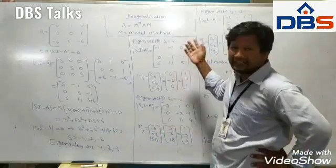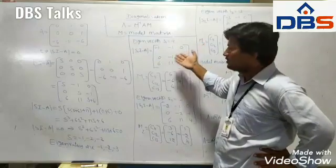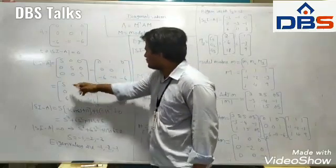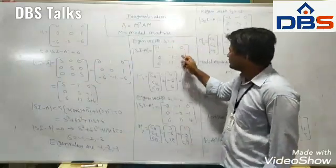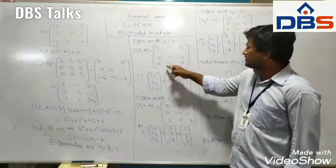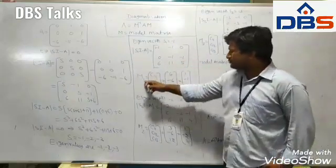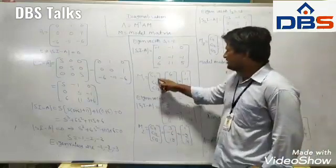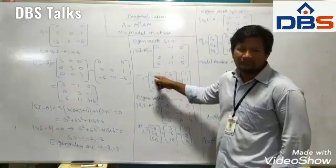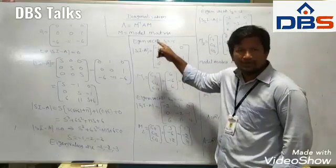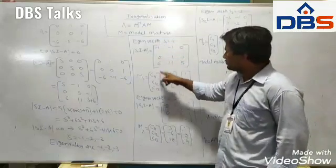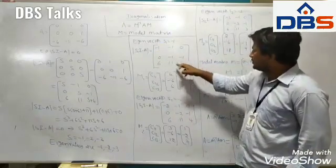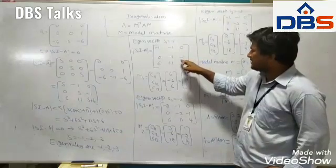To determine the eigenvectors, for S1 = -1, compute S1·I - A by substituting s = -1 in the characteristic equation. The matrix becomes [-1 -1 0; 0 -1 -1; 6 11 5]. To find M1, the first column of the modal matrix, compute cofactors C11, C12, C13. C11 is the cofactor of row 1, column 1: (-5)(−1) − (−11)(1) = -5 + 11 = 6.